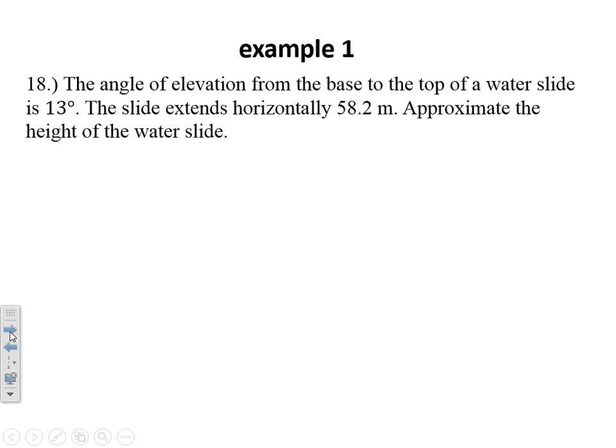First example, we've got the angle of elevation from the base to the top of a water slide is 13 degrees. Slide extends horizontally 58.2 meters, approximate the height of the water slide. We're going to rely heavily on our calculators and setting up the appropriate right triangle diagram to solve these problems. First, I'm going to make sure my calculator is in degree mode. That is how we most frequently see word problems used.